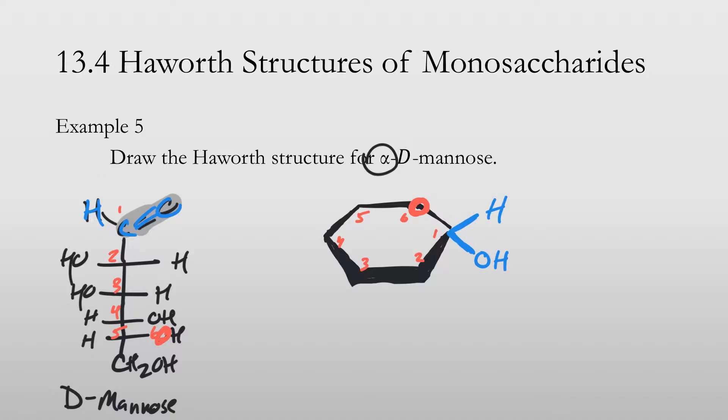And then everything on the left is going to go above the plane. So at carbon two, we have the alcohol up, the H down. Same thing at carbon three. We've got the alcohol up, the H down. At carbon four, we have the alcohol down and the H up. At carbon five, we have the... And since the bond had to rotate, that actually puts the hydrogen down below. Instead of having it above, it's going to be below because we had to rotate it to get that oxygen in place. And then the CH2OH, which if I make green, this CH2OH is going to be above the plane here.